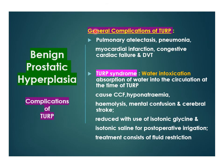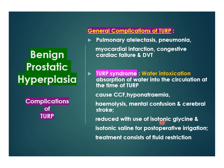Systemic complications of TURP include atelectasis, pneumonia, and myocardial infarction — particularly relevant as these are elderly patients. A specific complication is TURP syndrome or water intoxication, caused by absorption of irrigation fluid into the circulation, leading to CCF, hyponatremia, hemolysis, mental confusion, and cerebral infarct. Nowadays, with the use of isotonic glycine as irrigating fluid and isotonic saline for post-operative irrigation, TURP syndrome is much less common.